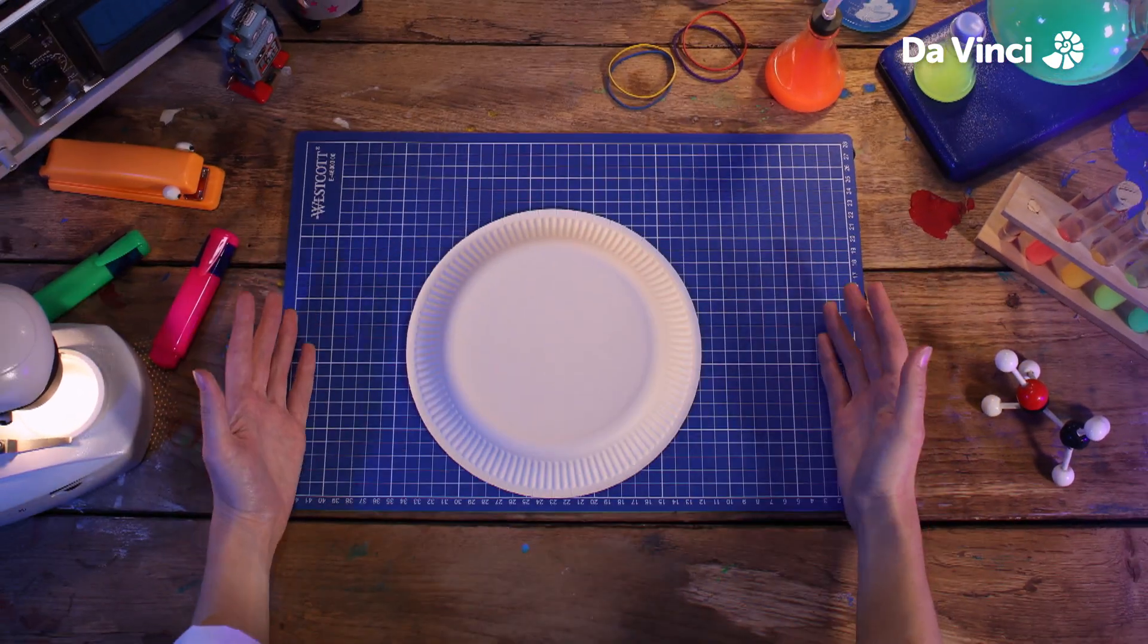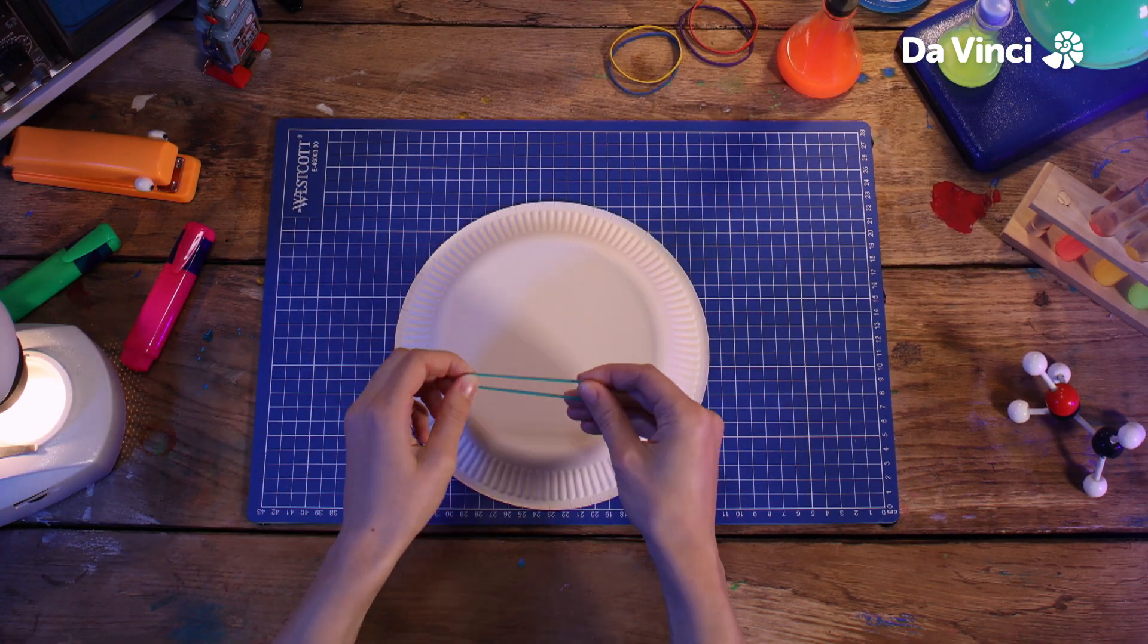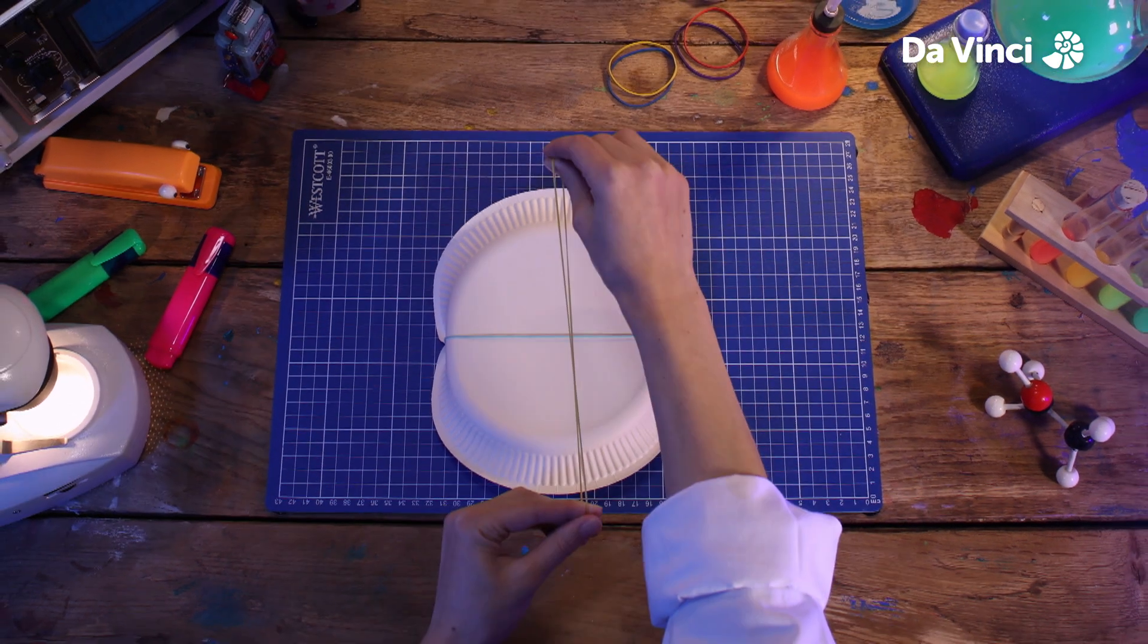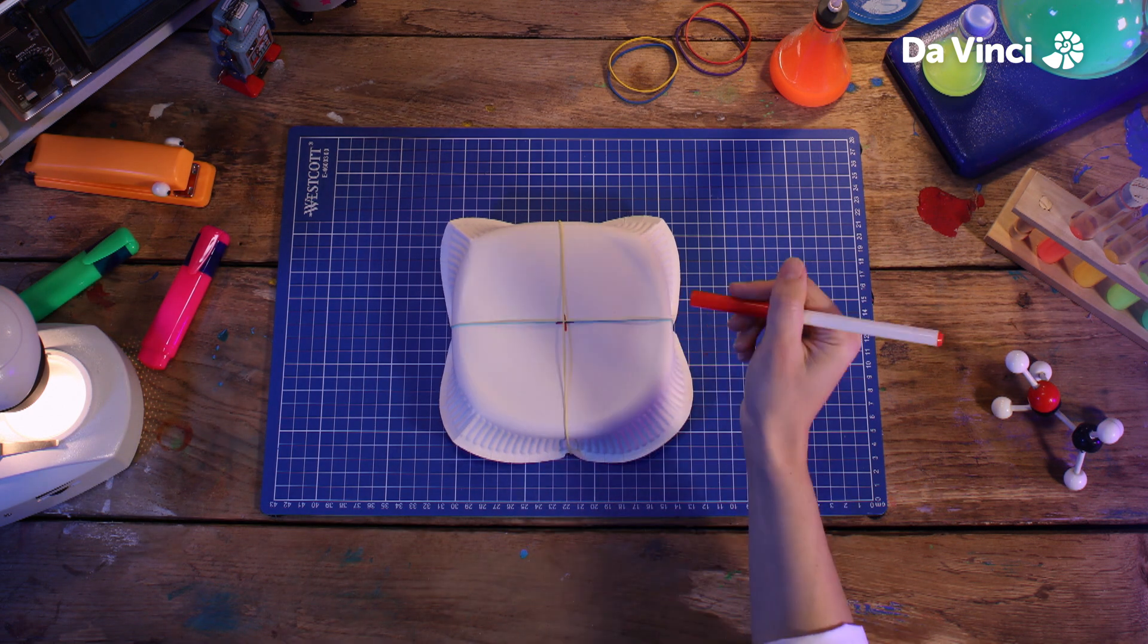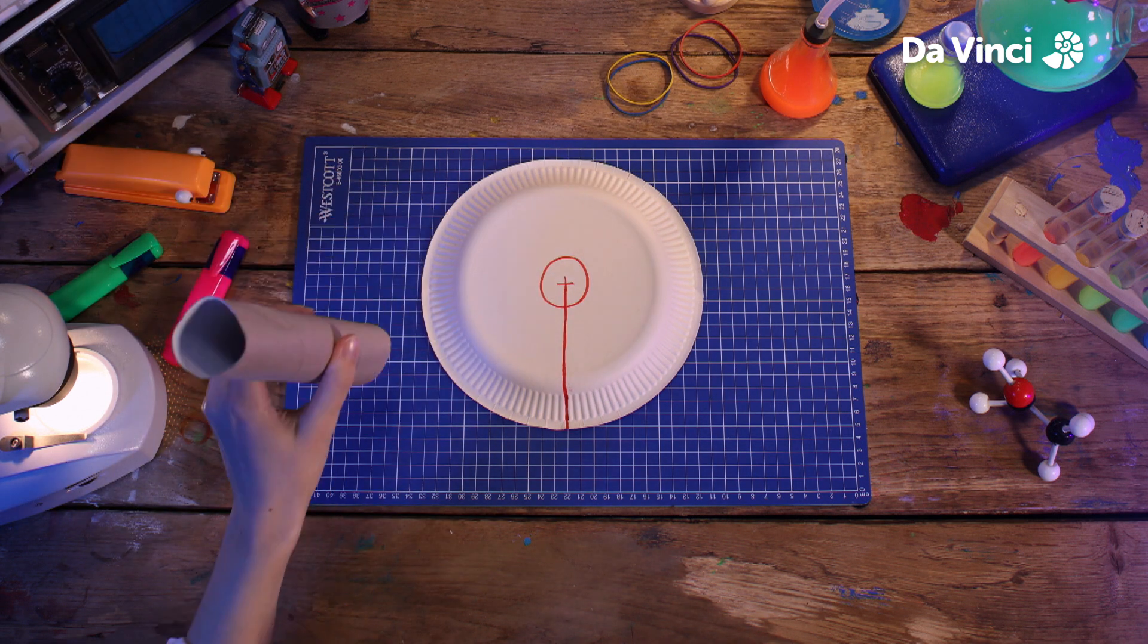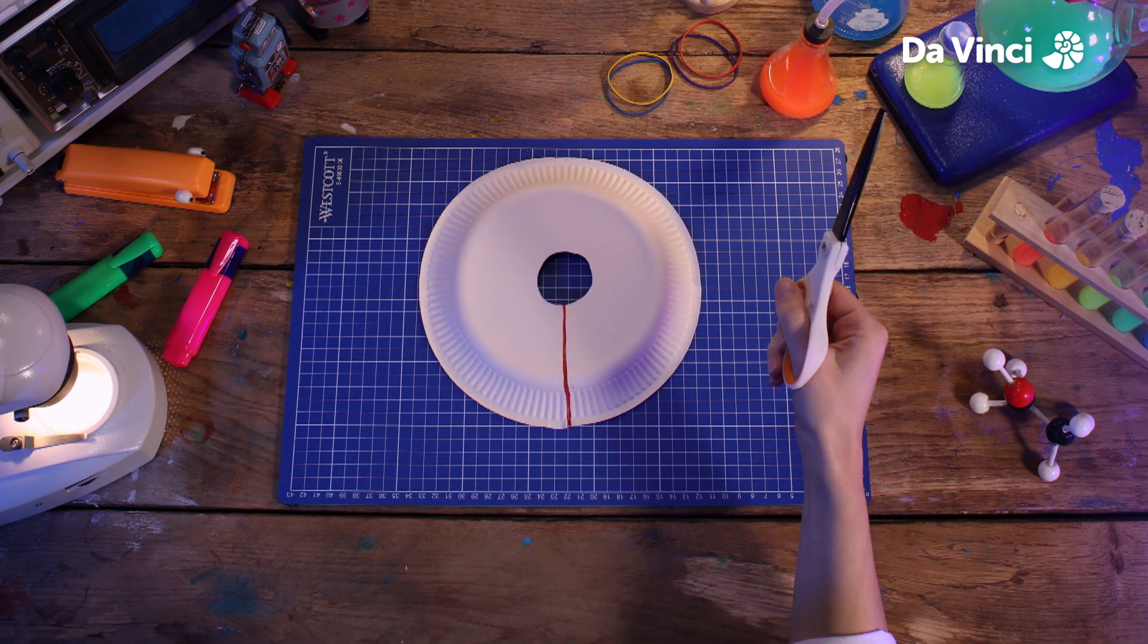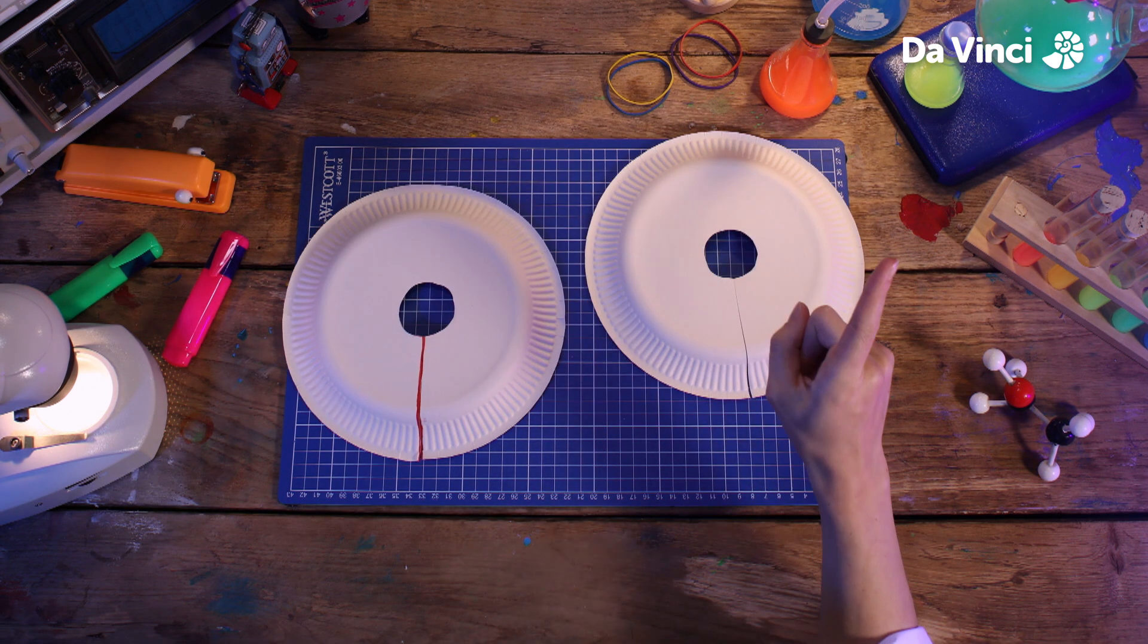We're going to start with one of our paper plates and use these elastic bands to mark up the center. Put one around the middle and then one over the top like this so they cross over. With a pen, I'm going to mark out the center and draw a line down like this. Now, drawing around the base of our tube, I'm going to draw a circle so we know where to cut. Lastly, we just cut all this out and cut along the line. We need three of these in total, so I'm just going to do this two more times.